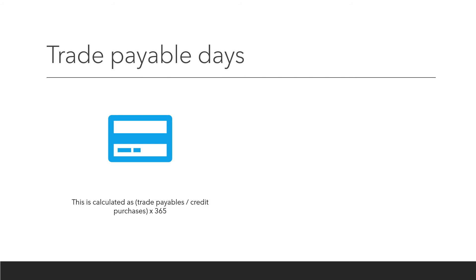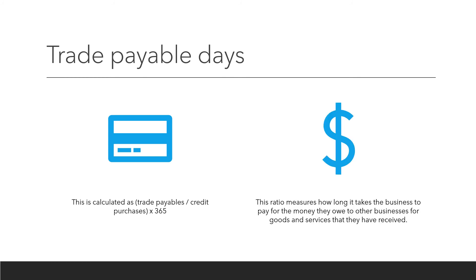Trade payable days. This is calculated as trade payables divided by credit purchases, times by 365. This ratio measures how long it takes a business to pay for the money they owe to other businesses for goods and services that they have received.